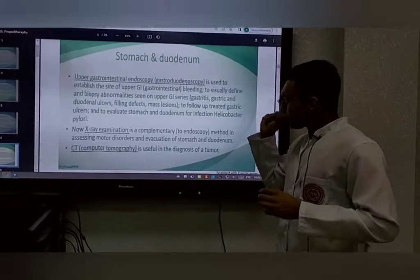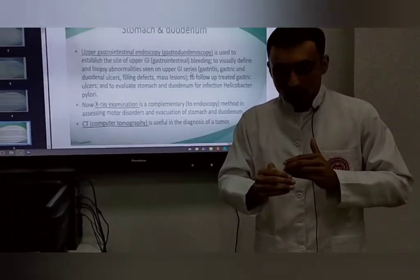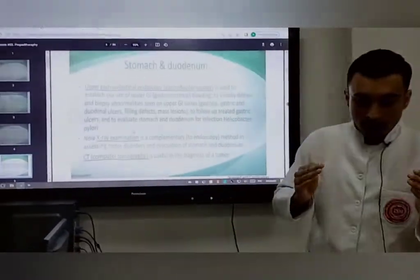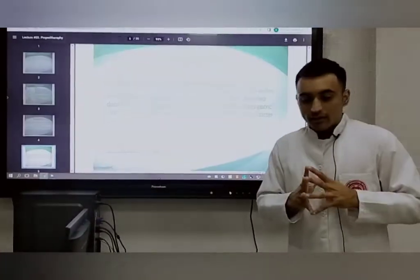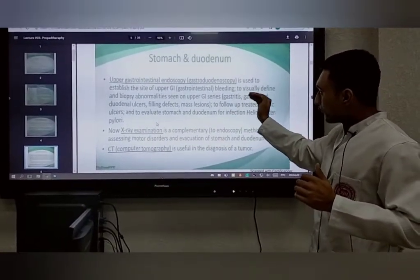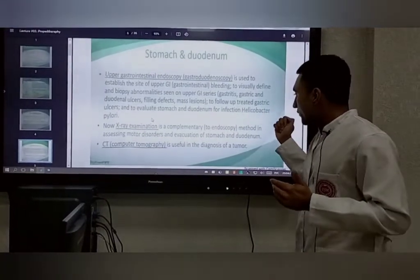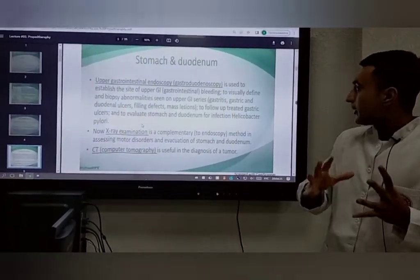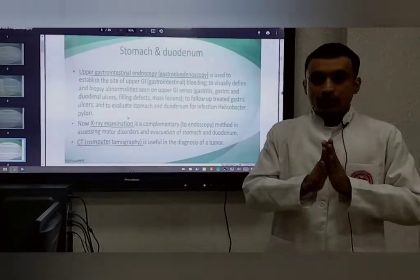After the esophagus, we talk about the stomach and duodenum. The primary method used is endoscopy. First, we assess upper gastrointestinal tract bleeding — it is observed and diagnosed. After assessing the upper GI bleeding, we check the biopsy abnormalities, which include gastritis and other diseases. In endoscopy, upper gastrointestinal bleeding and biopsy abnormalities are both assessed.